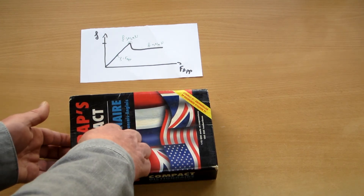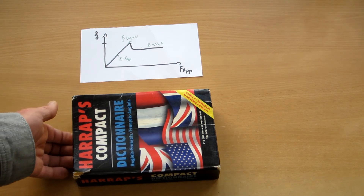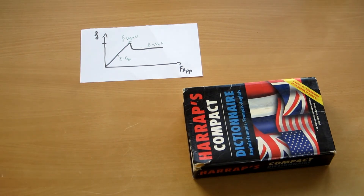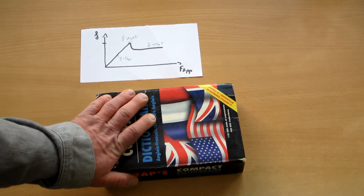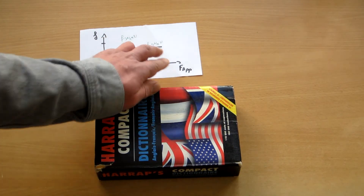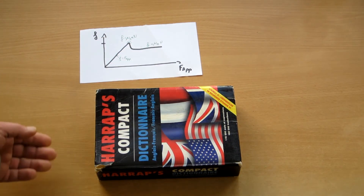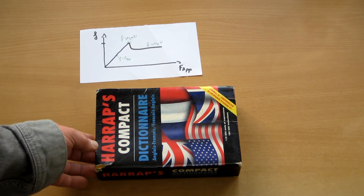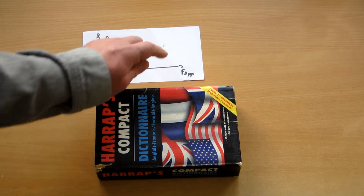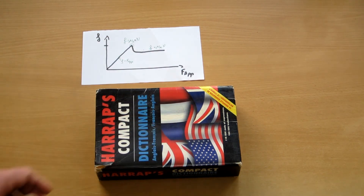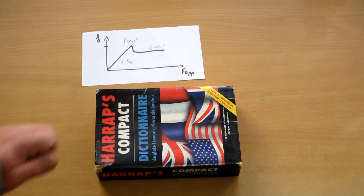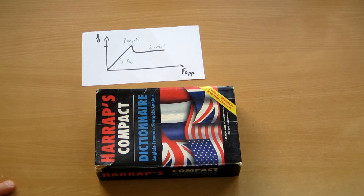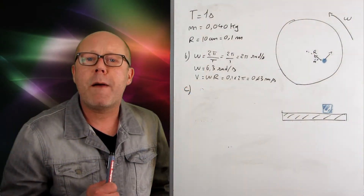Once the book starts moving, the resistance decreases — we've moved into kinetic friction. The kinetic friction force is also proportional to the normal force, but with a kinetic coefficient of friction, which is usually a little smaller than the static coefficient. Now let's go back to our problem.